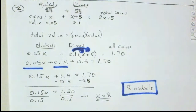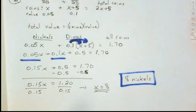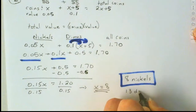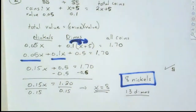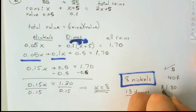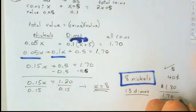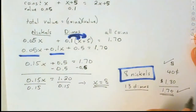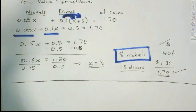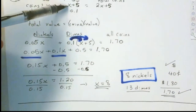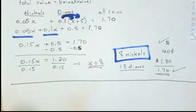We could also find the dimes — X plus 5 gives 8 plus 5, which is 13 dimes. To check: 8 nickels times 5 cents is 40 cents; 13 dimes times 10 cents is $1.30. Adding them together gives $1.70, and that makes sense. Dimes are 5 more than nickels: X plus 5, which is 8 plus 5, gives 13.